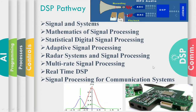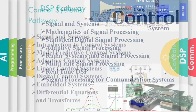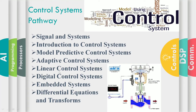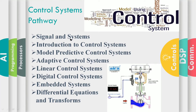The courses will enable the audience to design and analyze signal processing algorithms for various practical applications. Another important pathway is Control Systems. The Signals and Systems course is common with the DSP pathway. The remaining seven courses are: Introduction to Control Systems, Model Predictive Control Systems, Adaptive Control Systems, Linear Control Systems, Digital Control Systems, and Embedded Systems. The course Differential Equations and Transforms provides mathematical foundations for almost all pathways, especially DSP, Controls, and Artificial Intelligence. We may also provide courses including non-linear and multivariable control systems.